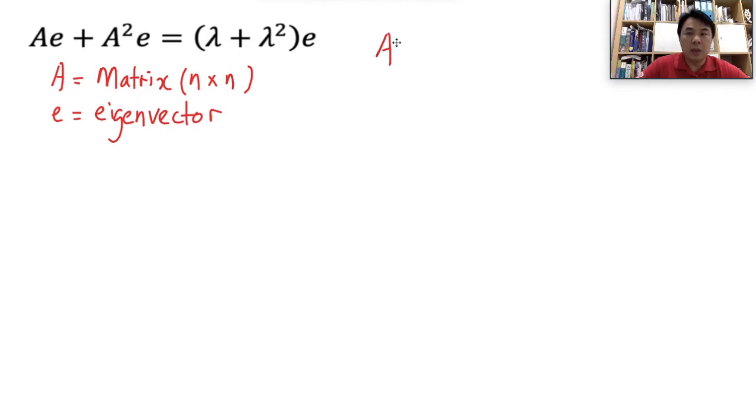We start by looking at any eigenvalue and eigenvector would satisfy this simple equation. A is any transformation matrix n by n. So Ae would always satisfy this equation here, where the lambda is its eigenvector. This is known as its eigenvalue.